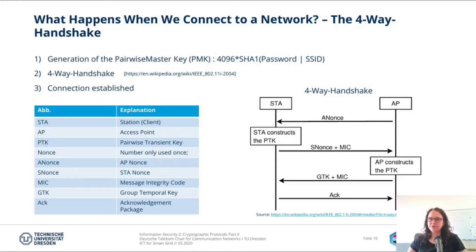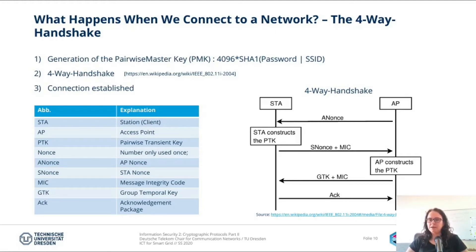The access point sends A-nonces out continuously — this is how you can find the Wi-Fi network. You see the network on your phone, you want to connect, so you receive the A-nonce, type in the password, and construct the PTK from it. You then send the S-nonce together with the MIC to the access point, and the access point constructs the PTK from this information. Then the GTK and MIC are sent back. As soon as the station receives that information, it verifies it and sends an acknowledgement packet. At this moment the connection is established and every message sent via the network is encrypted.